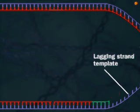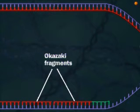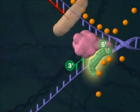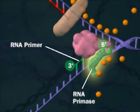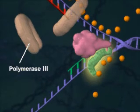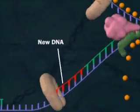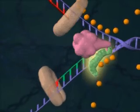The lagging strand has to form from 5' to 3' too. It forms in pieces called Okazaki fragments. First, an RNA primase lays down an RNA primer. Then, DNA polymerase 3 lays down new DNA. The process repeats again and again.